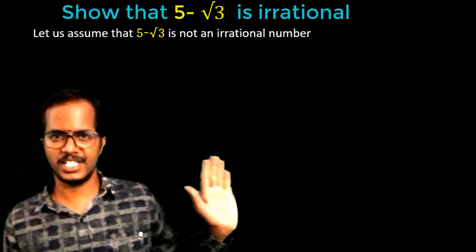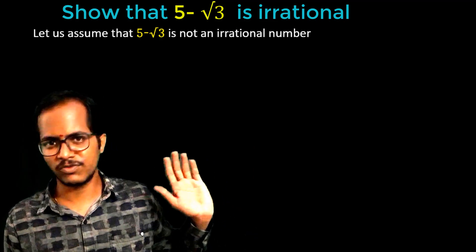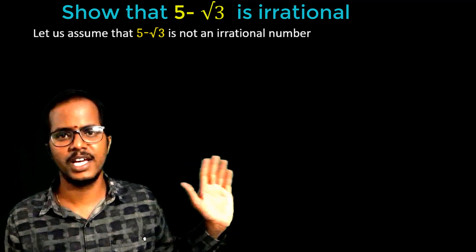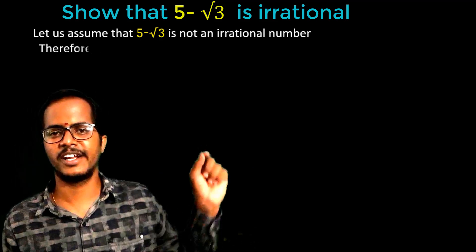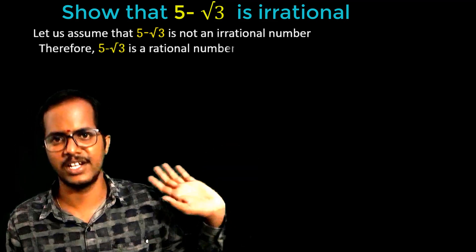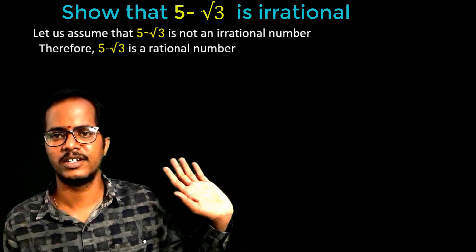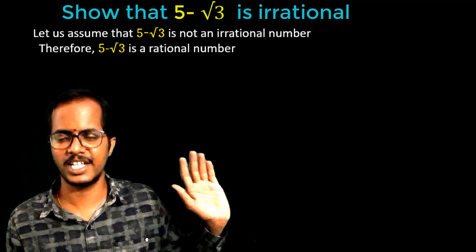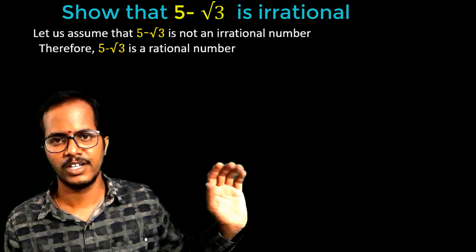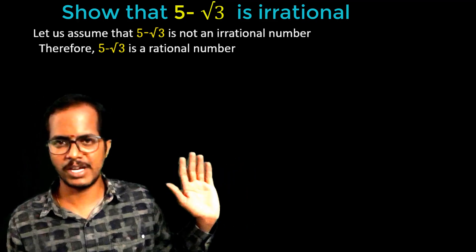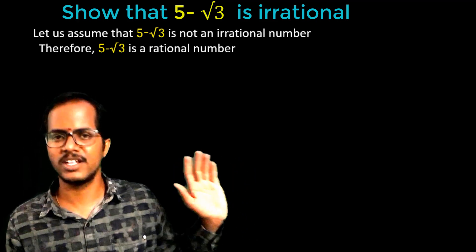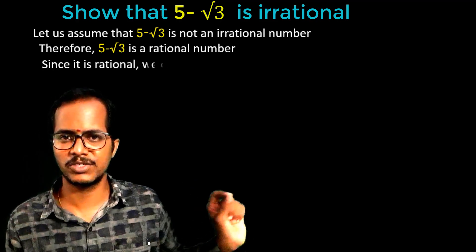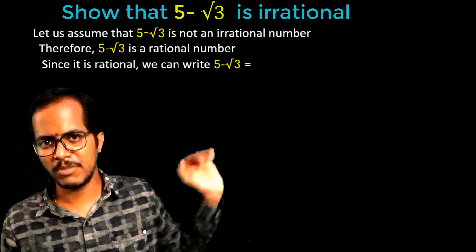If it is not an irrational number, then it would be a rational number. So we can write 5 minus root 3 is a rational number. If it is a rational number, we can write it in rational form. So let us write 5 minus root 3 in rational form. By writing it, we get 5 minus root 3 equals to A by B.